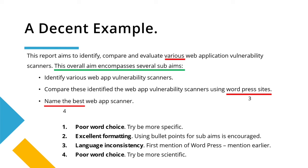So the first bullet point says 'identify the various' — brilliant. Then 'compare' for the second one — brilliant. And then 'evaluate' or similar for the third, though they haven't quite done the third one as well. But bullet points are basically cheat codes when it comes to aims — they break up the aims and make them much easier to write. And when it comes to your discussion, you can go back to these specific bullet points and say you met that aim, you met that aim, you met that aim — with a paragraph for each. Then you can say overall the aim was to do this, and through these sub-aims, we've done it.